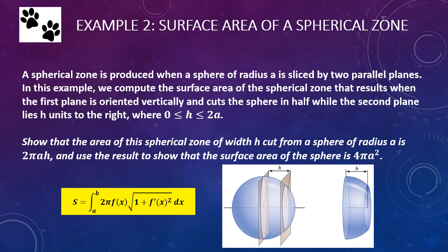Now let us look at Example 2 — an interesting example for a number of reasons. We're going to calculate the surface area of a spherical zone. A spherical zone is produced when a sphere of radius a is sliced by two parallel planes. In this example, we compute the surface area of the spherical zone that results when the first plane is oriented vertically and cuts the sphere in half, while the second plane lies h units to the right, where 0 is less than or equal to h is less than or equal to 2a, which is the diameter.